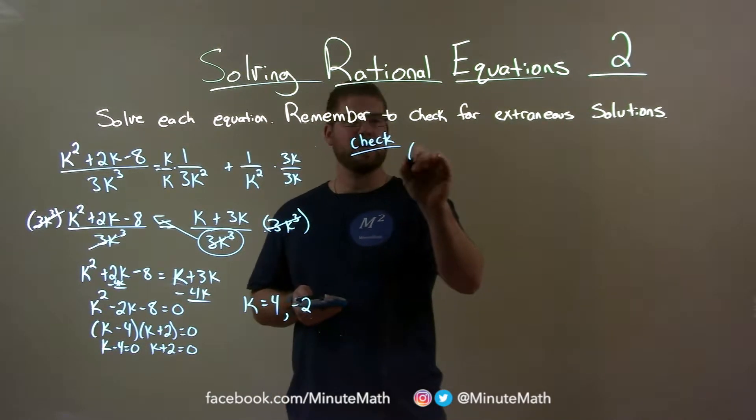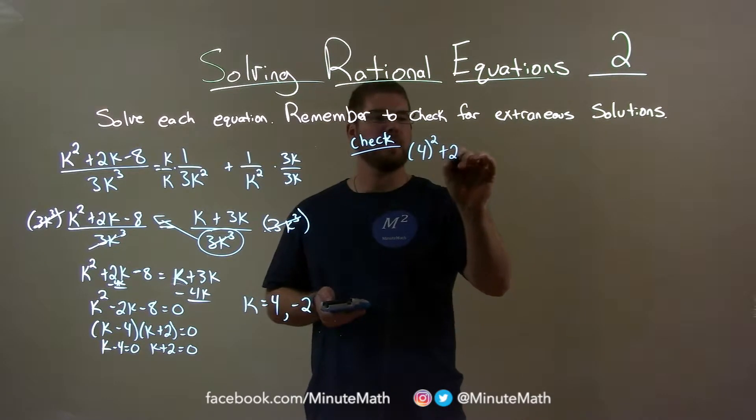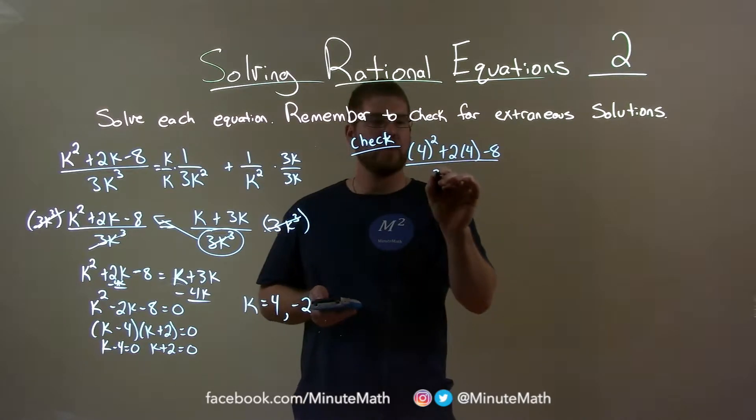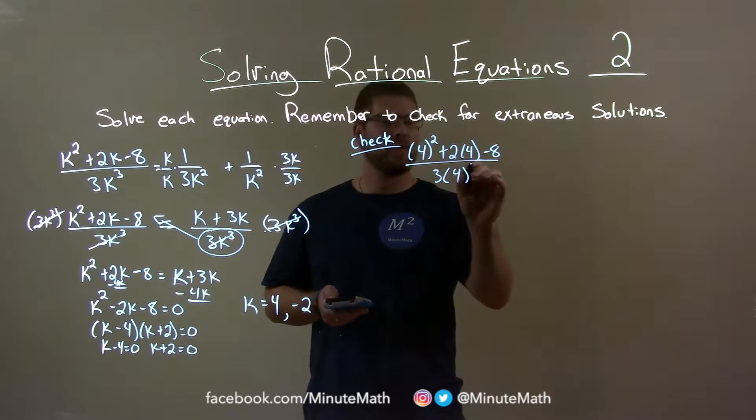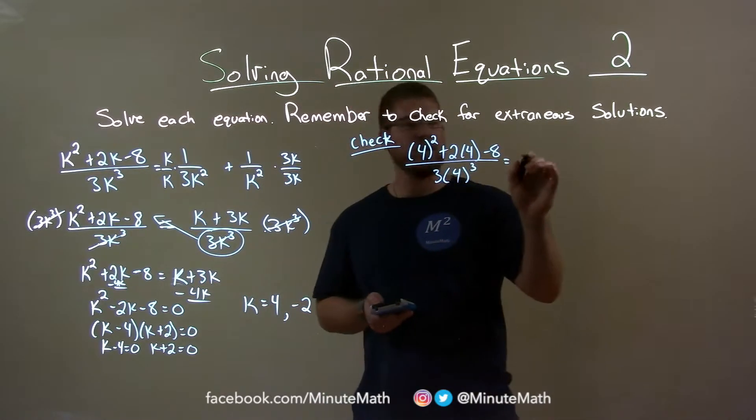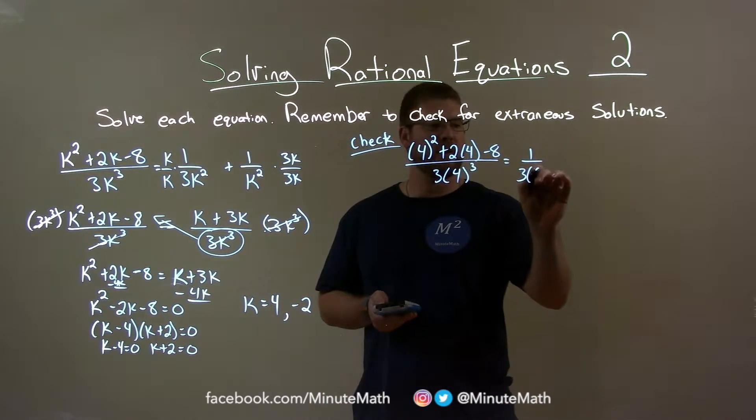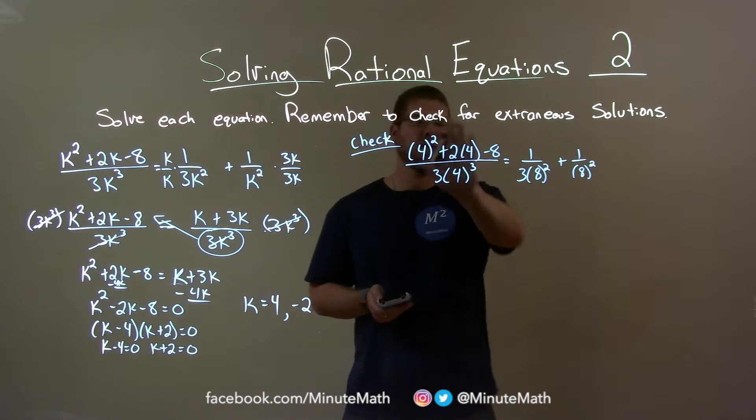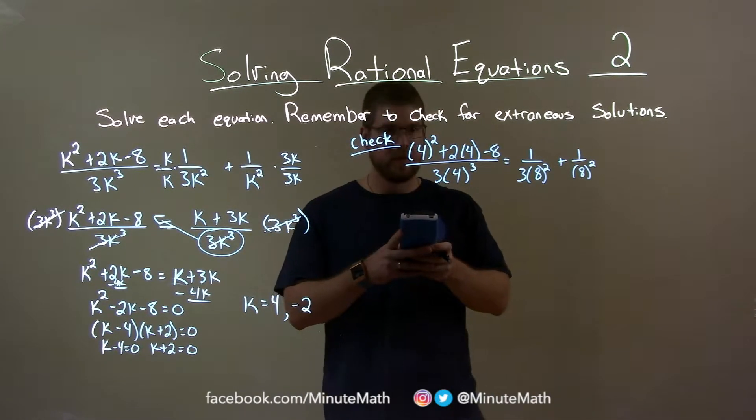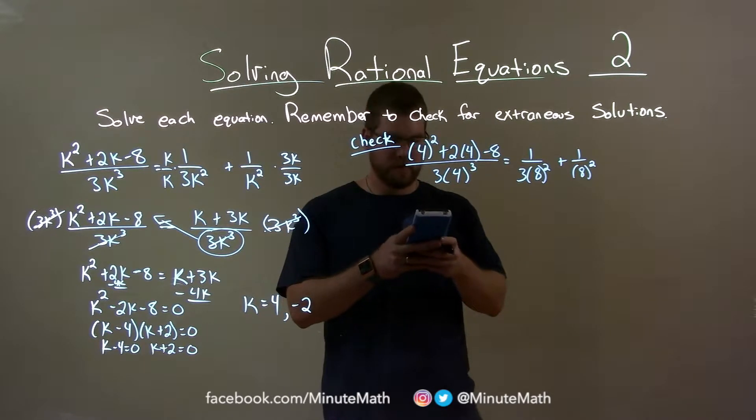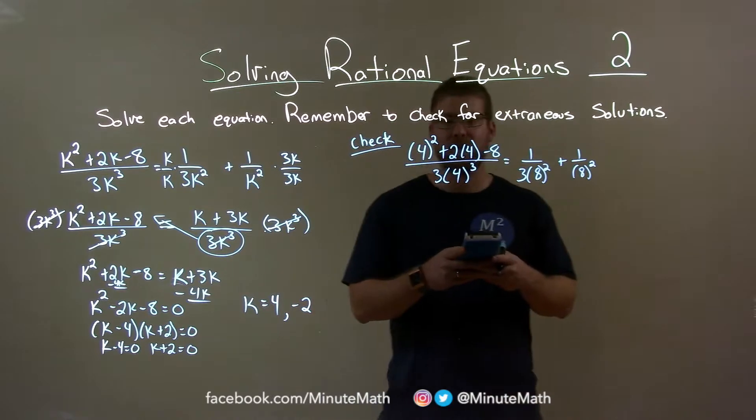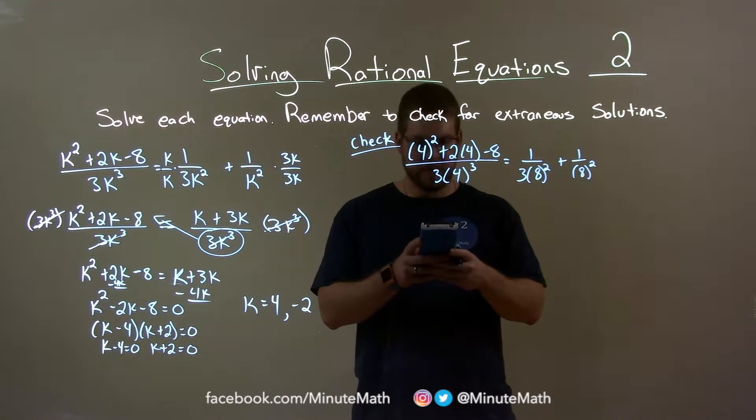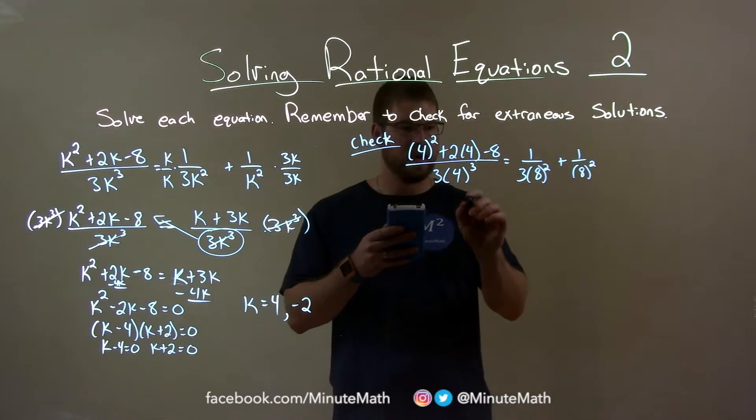So let's do 4 first. 4 square plus 2 times 4 minus 8 over 3 times 4 to the third power, and that should equal 1 over, remember the original equation, 3 times 8 square plus 1 over 8 square. Let's see if we can get this whole big fraction at once here. 4 square plus 2 times 4 minus 8, that's all going to be 16, and we're dividing that by 3 times 4 to the third power. And our fraction here should be a 1 twelfth.